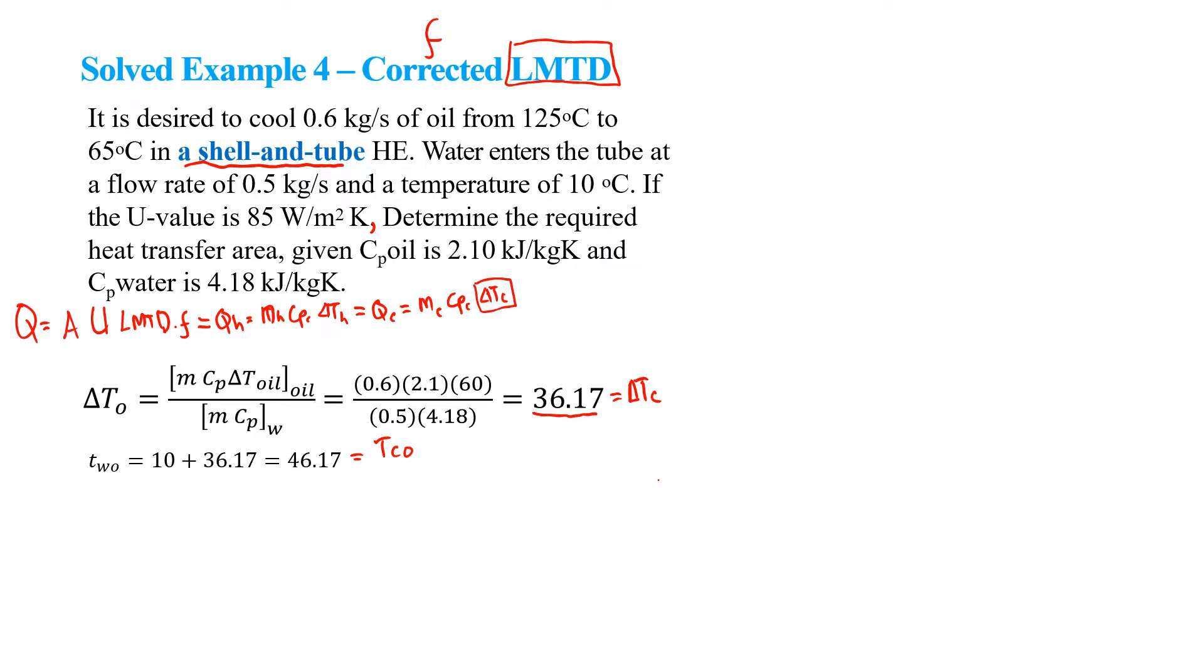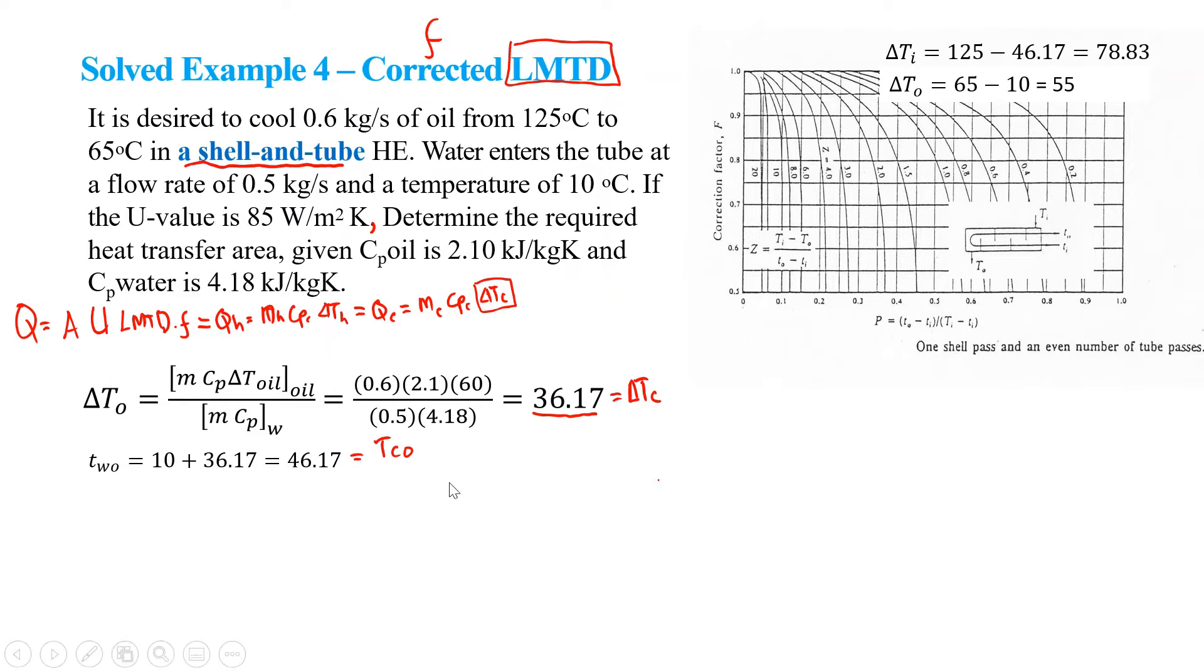What we do next is we need to find out the correction factor F, which can be obtained from the chart. This is the one for the shell-and-tube heat exchanger, specifically for one shell pass and even number of tube passes. You can have two passes of the tube, four, six, and so on. If not specified, you can choose either side, but in this example I will use the shell side as the oil for the hot fluid and the tube side is water.